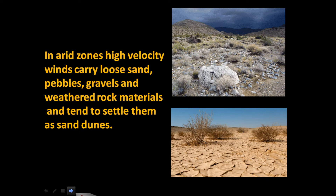In the desert or arid zone, high-velocity winds carry loose sand, pebbles, gravels, and weathered rock materials, depositing them as sand dunes, thus continuously intensifying desertification. Loss of invaluable topsoil also occurs due to intensive farming over the years and neglect of soil protection factors, leading to unproductivity and poor crop yield. Since topsoil contains humus and is the most important soil layer, once it is removed, unproductivity and poor crop yield prevail in those areas.